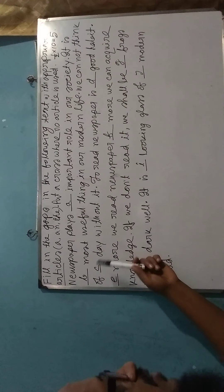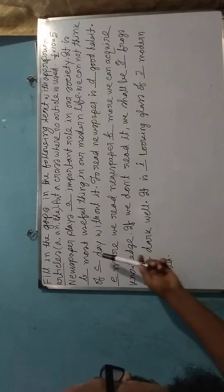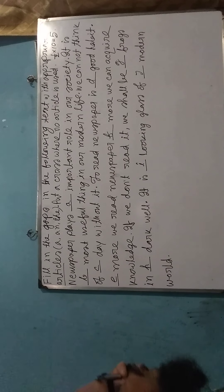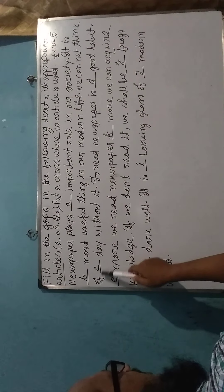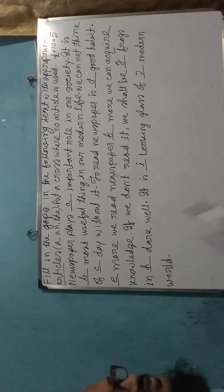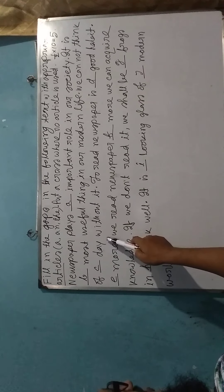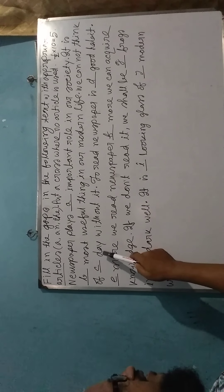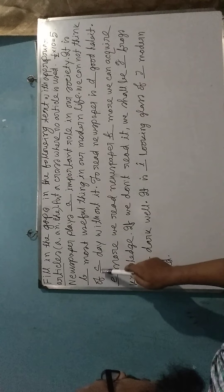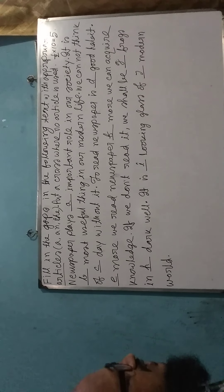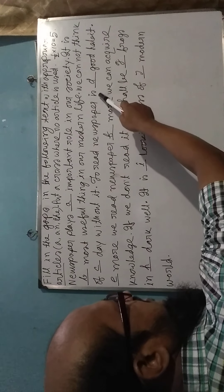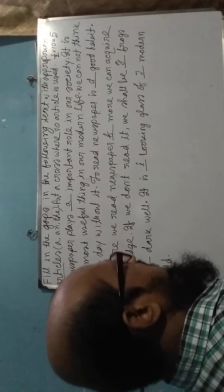The next sentence: 'We cannot think of [blank] day without it.' Here 'day' is a noun. The letter 'd' is not a vowel — it is a consonant — so we shall use 'A.' Why not 'The'? Because it is not any definite or specific day; it means any day. So we have to use 'A day.'